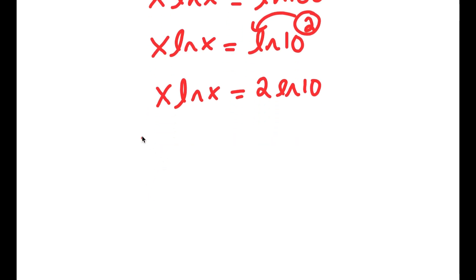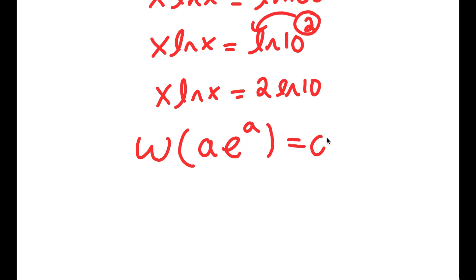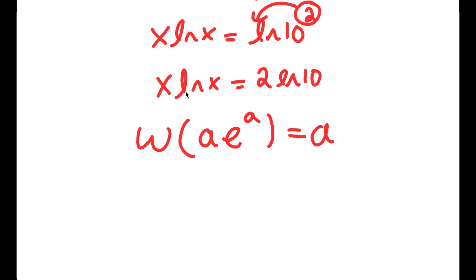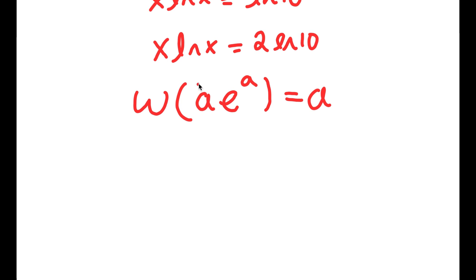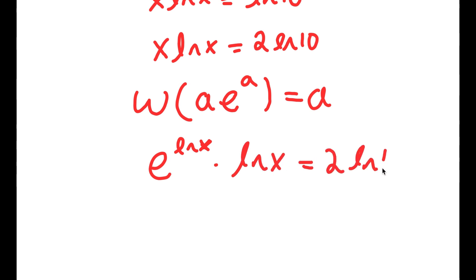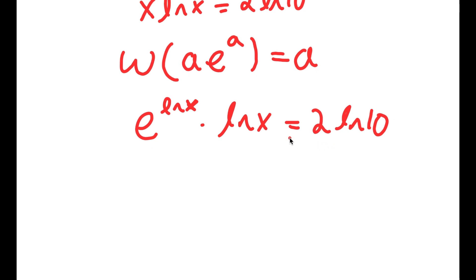There's something called the Lambert W function. If I have something in the form a times e to the power of a, the W function of that equals a. What I want to do is rewrite x as e to the power of ln x, because e and ln cancel out resulting in simply x. So I rewrite: e to the power of ln x times ln x equals 2 times ln 10. This is now in the form a times e to the power of a.